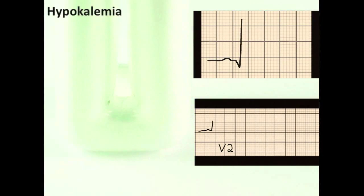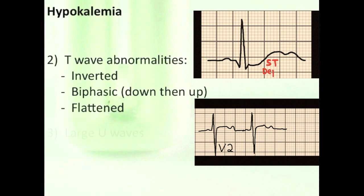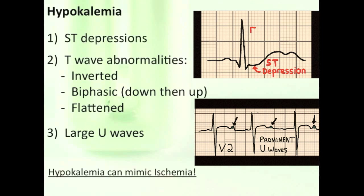Hypokalemia on ECG may show ST depressions, T wave inversions, and large U waves. So hypokalemia can mimic ischemia because of all three of these, ST depressions, T wave inversions, and U waves. But in ischemia, you won't see U waves as often. Large U waves are more specific for hypokalemia.